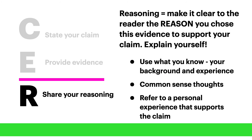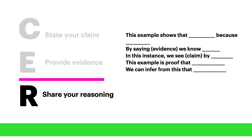The final step in the process to make sure that my paragraph is complete is to provide my reasoning. Reasoning means that I'm going to make it clear to the reader the reason I chose the evidence to support the claim. Basically, I'm explaining myself. To do this, you will use what you know — meaning your background or experience — make common sense or logical statements that support the evidence and claim, or even refer to a personal experience that supports the claim. Here are some sentence starters that might help you remember how to do this. Take a screenshot or write these down to help you.